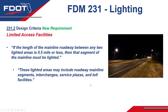The second part of the requirement states that these areas may include roadway mainline segments, interchanges, service plazas, and toll facilities. These areas require lighting of the mainline, and if you have a short roadway segment between these areas, then you'd want to add lighting.